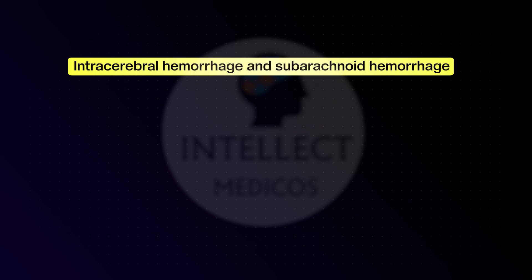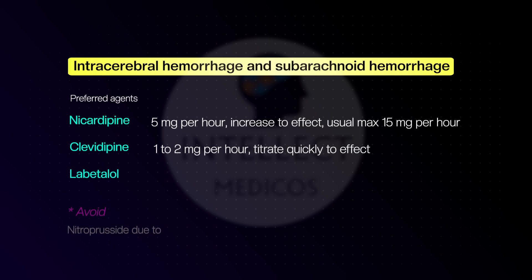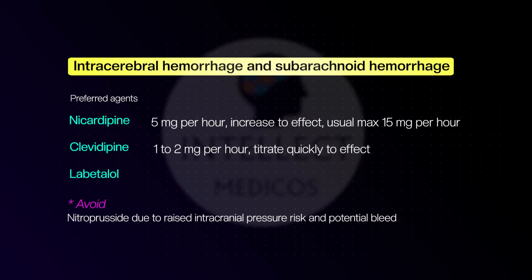For intracerebral hemorrhage or subarachnoid hemorrhage, preferred agents are nicardipine, clevidipine, or labetalol. In neurological conditions — especially bleeds — always avoid sodium nitroprusside. It is a cerebral vasodilator, the bleeding can worsen, and intracranial pressure can increase. Never give sodium nitroprusside in neurological conditions.